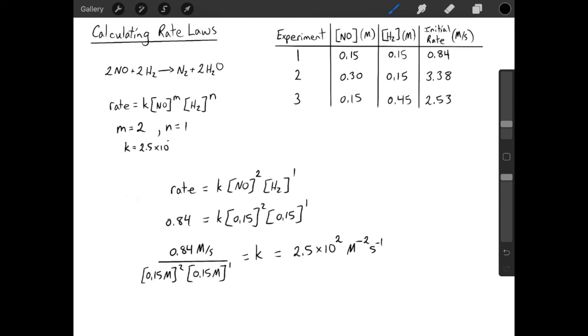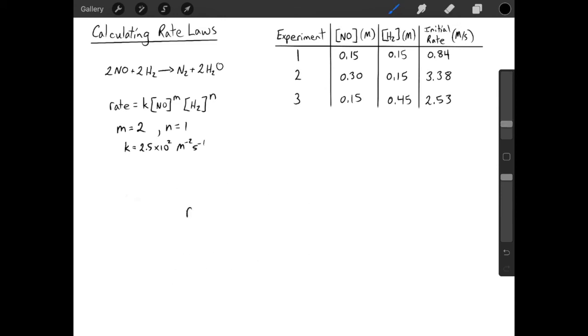Now that we have K, we can write a completed rate law. Typically, if the order of reaction with respect to one of the reactants is 1, like in this case our N value is 1, you omit it when you're writing the rate law and the 1 is just implied.